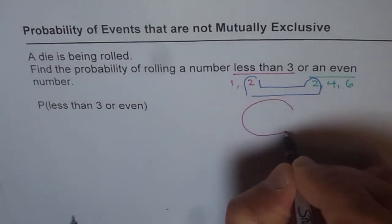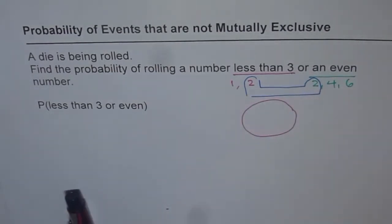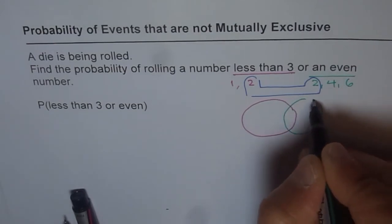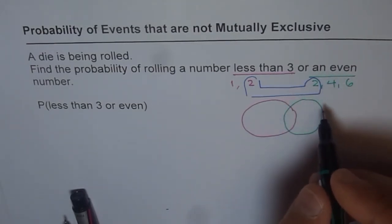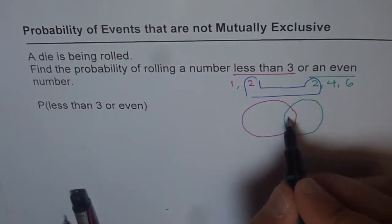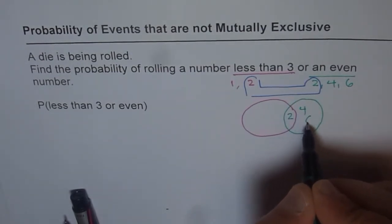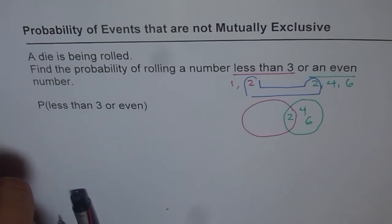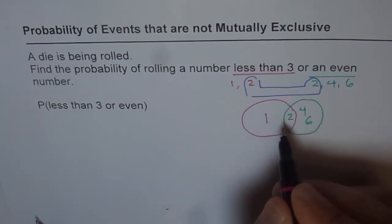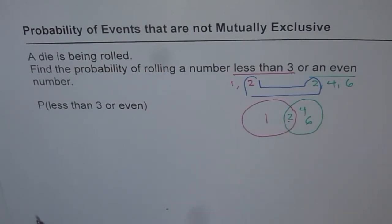Let's say this is the probability of less than 3. And then we have probability of even numbers like this. Then what are the even numbers? And what are less than 3 numbers? So the even numbers will be 2, 4 and 6. And less than 3 numbers will be 1 and 2. Do you see that? 1 and 2. Now 2 is common.